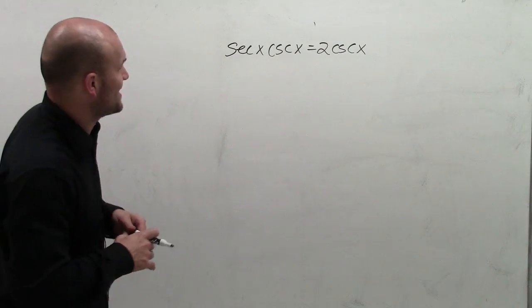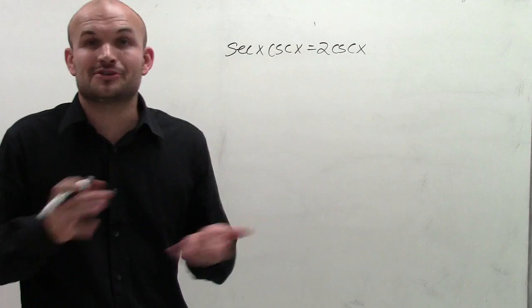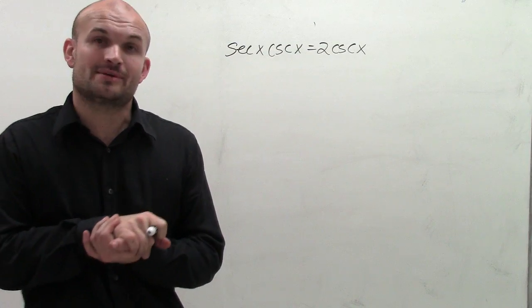Welcome. So what I have is secant of x times cosecant of x equals 2 cosecant of x, and what I want to do is show you how to solve this trigonometric equation.